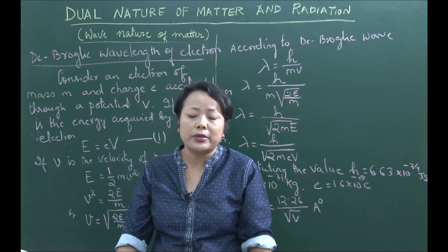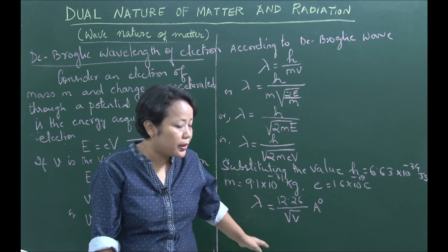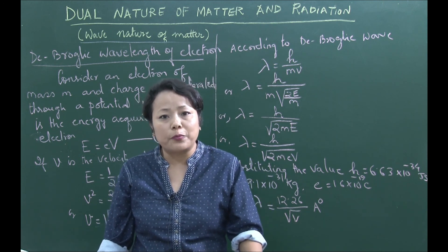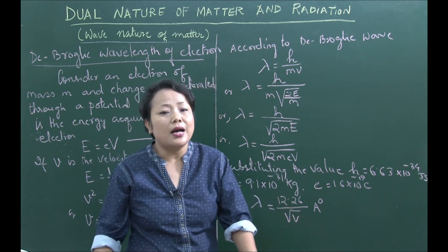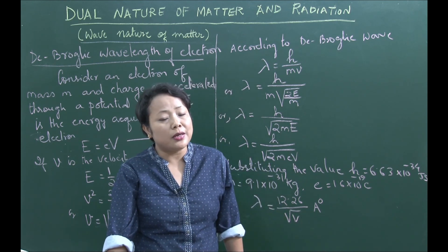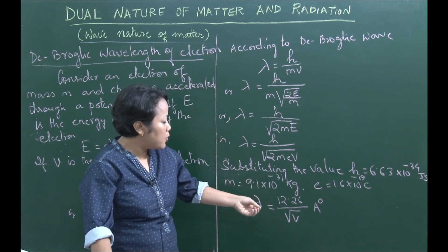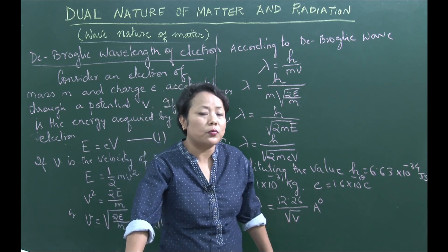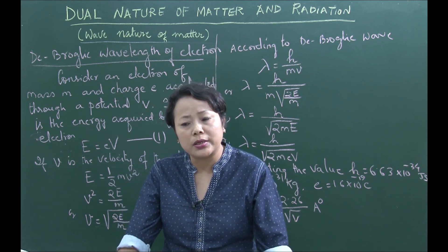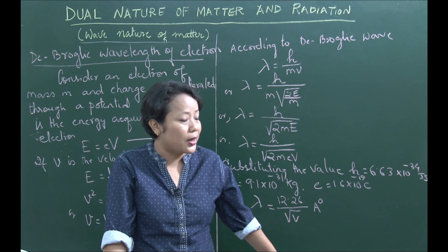This is the theoretical value of the de Broglie wavelength of an electron. In science, theory must be supported by experiment. The experimental measurement of the electron's wavelength matched this theoretical value, confirming that the electron — a particle — also exhibits wave nature, proving dual nature.